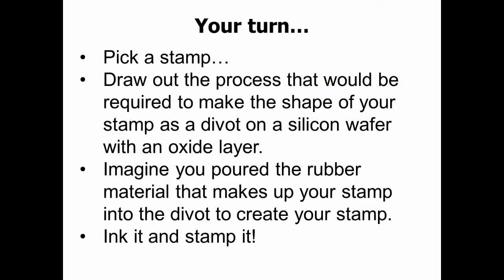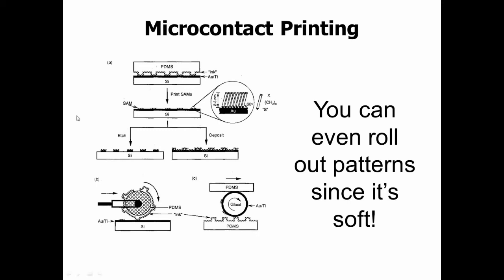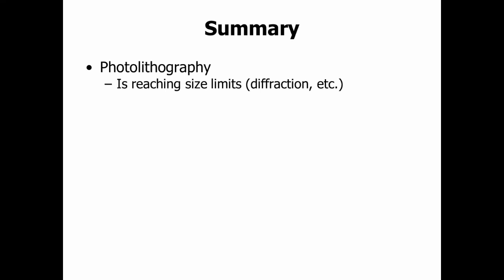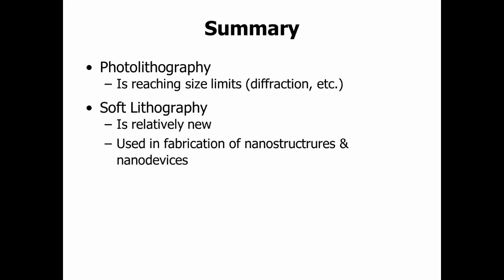In class, we do something to help you understand how this works — if you missed this lecture day, you'll be there when we make the jello molds. Micro contact printing is cool because you can even roll out patterns since it's soft — imagine a rolling pin with a pattern around it. As a summary: photolithography is reaching size limits because of diffraction. Soft lithography is relatively new, and they are using this technique to fabricate nanostructures and nanodevices.